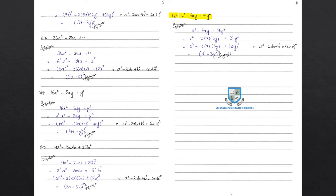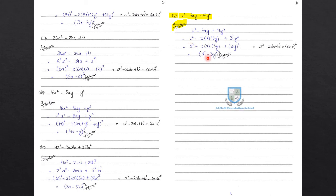Part 5: x square minus 6xy plus 9y square. Breaking 6xy as 2 times x times 3y, and writing 9 as 3 square: x square minus 2 times x times 3y plus 3y whole square. This matches a square minus 2ab plus b square, with a equals x and b equals 3y. So simplified form is x minus 3y whole square.